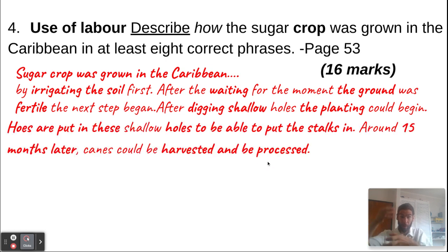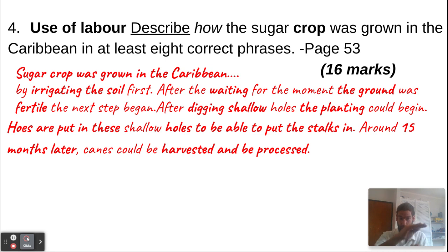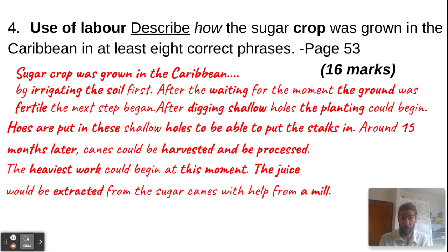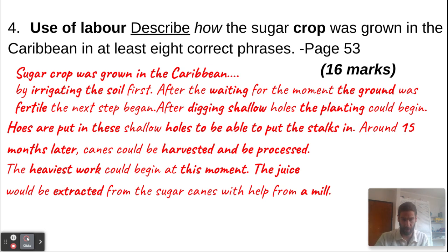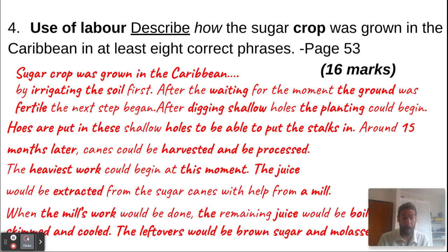The stalks were placed into these shallow holes that had just been dug. Around 15 months later, the canes could be harvested — cut off — and after that the canes could be processed. The heaviest work would begin at this moment: after harvest, the juice would be extracted from the sugar canes with help from a mill.